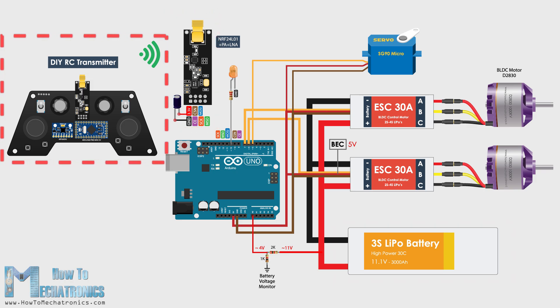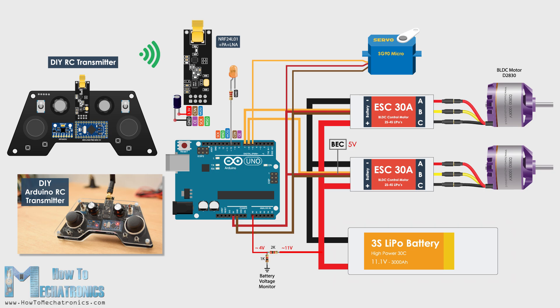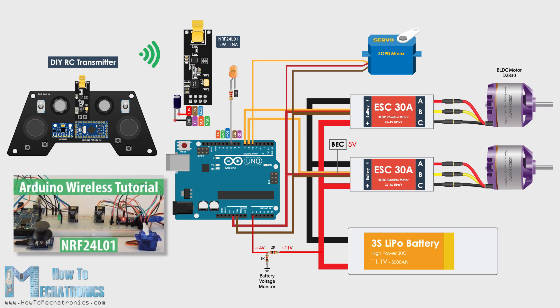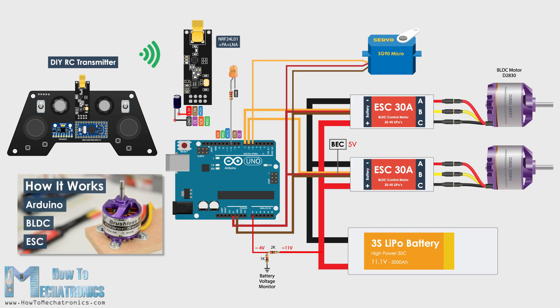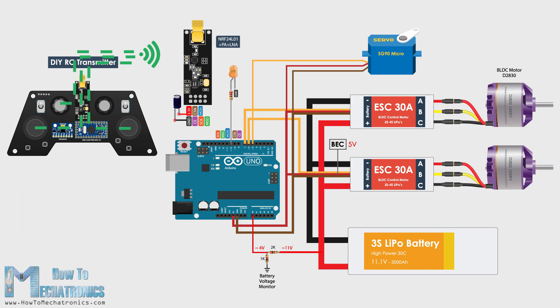The RC transmitter that I will use for controlling the hovercraft is the one that I custom built in one of my previous tutorials, so you can check it out in case you need more details about it. There are also detailed tutorials on the NRF24L01 module and how to use brushless motors using Arduino. Nevertheless, the basic working principle is that the transmitter sends the joysticks or the potentiometers data to the receiver which controls the speed of the brushless motors and the position of the servo.